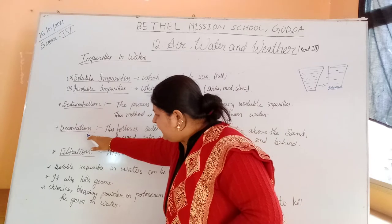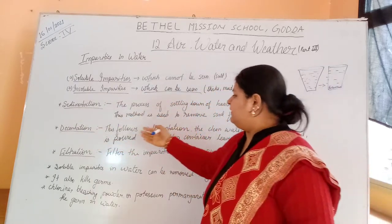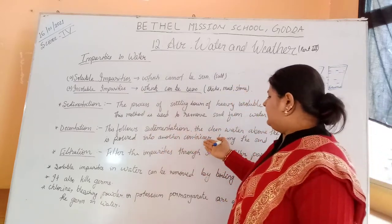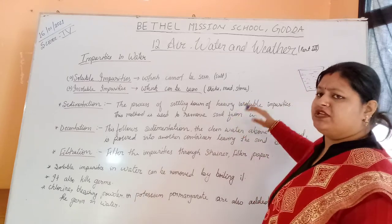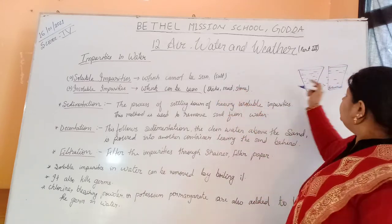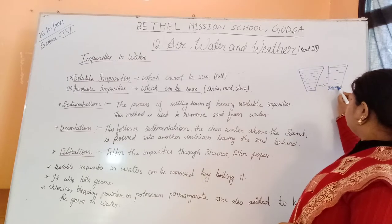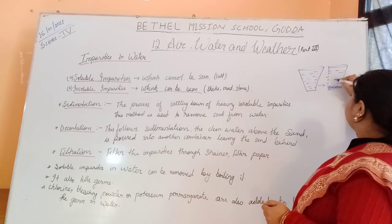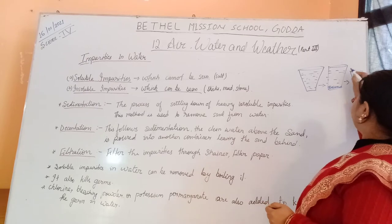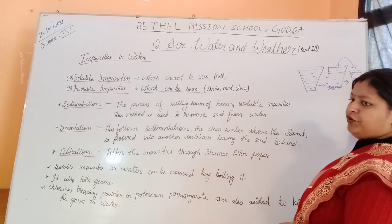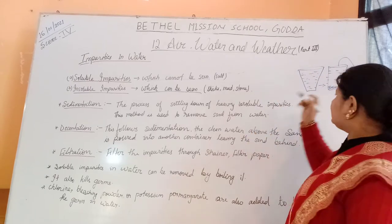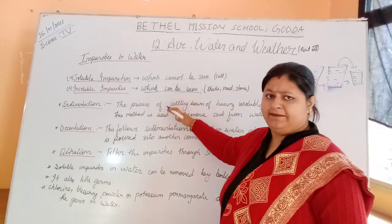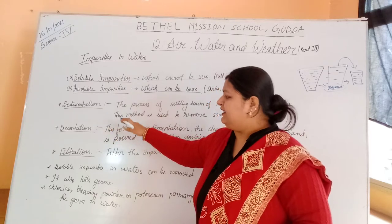Next is decantation. Decantation is the process that follows sedimentation. The clear water above the settled sand is poured into another container, leaving the sand behind. After sedimentation, when the impurities have settled down, we slowly pour the water into another clean container. The pure water goes into the clean container while all the impurities remain settled in the first bucket. This process is known as decantation.